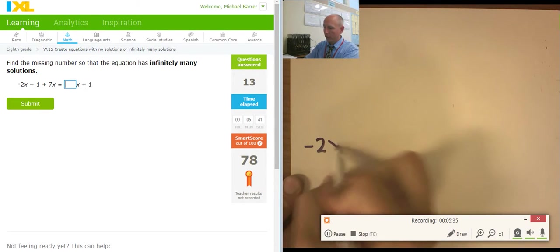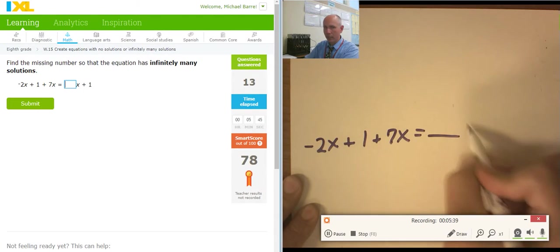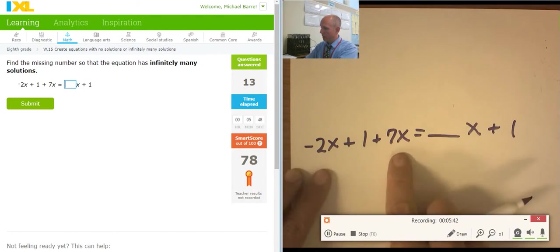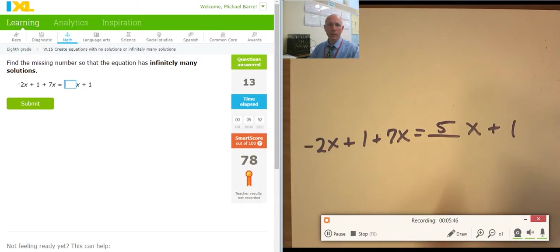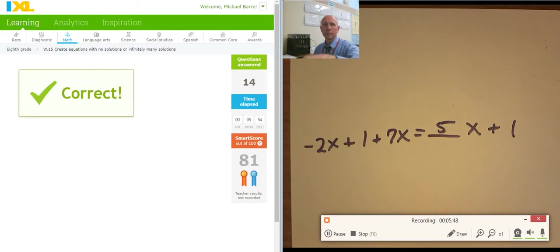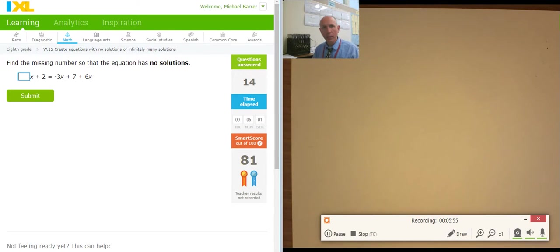There we go. Negative 2x plus 1 plus 7x equals blank x plus 1. This is 5x. So I need a 5x here to cancel with it. So 5x. Okay. That's it. Did I say this was my last video of the day? 15. It is. Let's do one more then. Not one more video. One more problem.